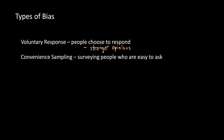The second type of bias is going to be convenience sampling. This is where you only survey people who are really easy to ask. For example, if you're going to be surveying your school but you only ask your friends about their opinions, that's going to be convenience sampling because your friends are easier to ask than some random strangers, so you're effectively putting bias into your survey.